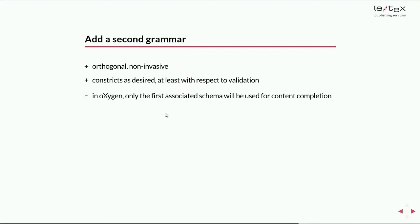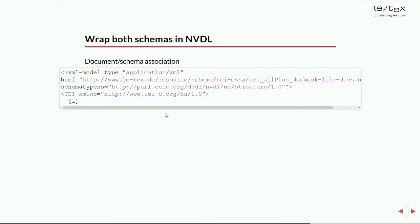For bibliography it would look like this: you have the div element with a certain attribute and a head, and then the list div element without allowing a head inside it. This is the way we enforce this constraint. So far it's quite good — it's like a Schematron orthogonal non-invasive approach, and it restricts the base schema as desired, but only with regards to validation.